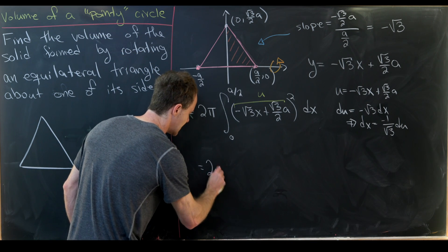That makes du equal to negative root three dx. But that means that dx is equal to negative one over root three du. That means our integral is now two times pi with a minus sign out front that we're factoring from this dx and then we can put a square root of three in the denominator and then we'll have the integral of just u squared du.